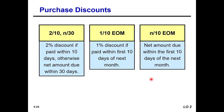Terms 2/10 net 30 means: 2% discount if paid within 10 days; otherwise the net amount is due within 30 days. All of this relates to credit purchases. So if the buyer pays the seller within 10 days, he gets a 2% discount on the net amount. If he fails to pay within 10 days, he must pay the full amount within 30 days — that is net 30.